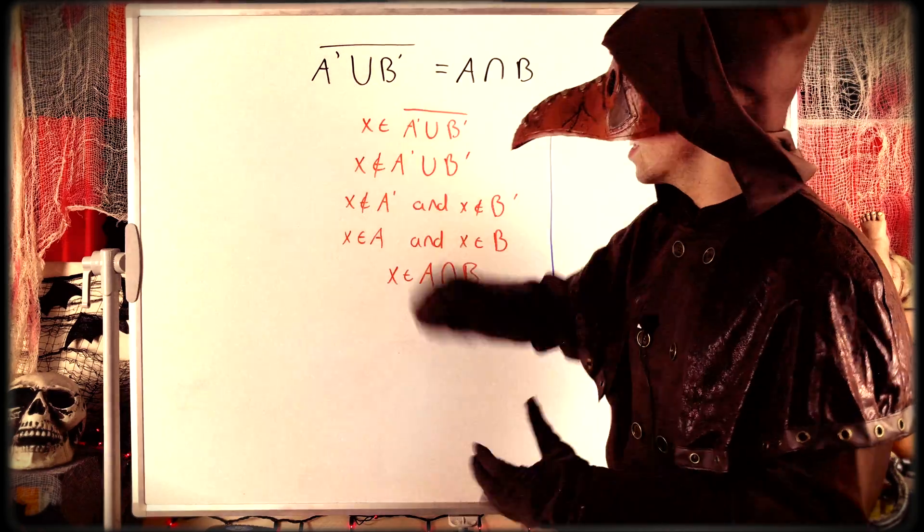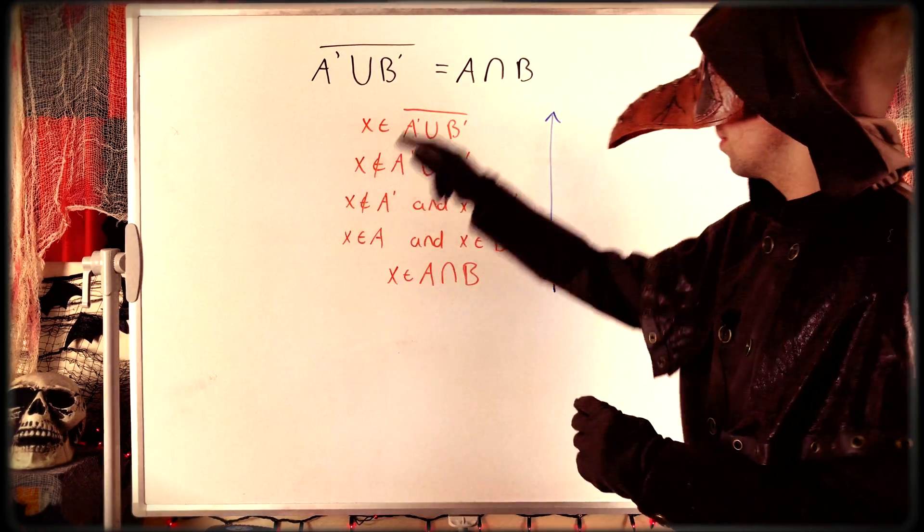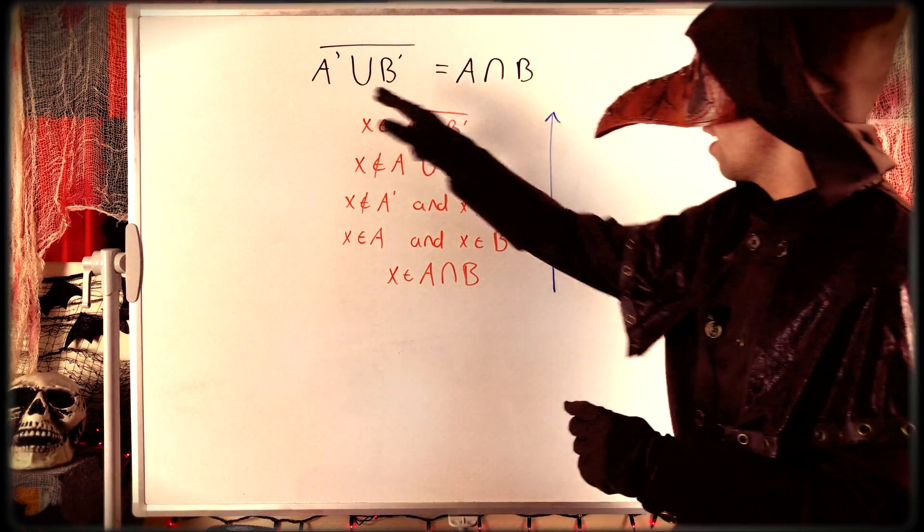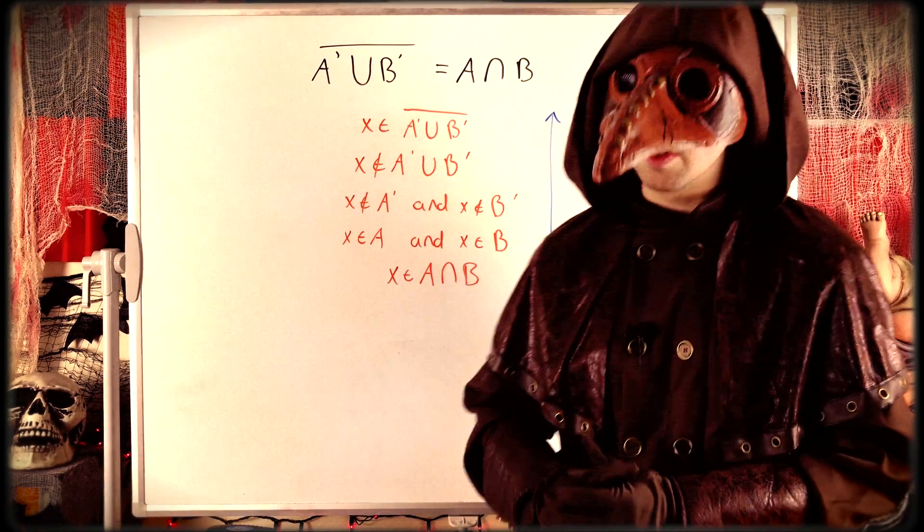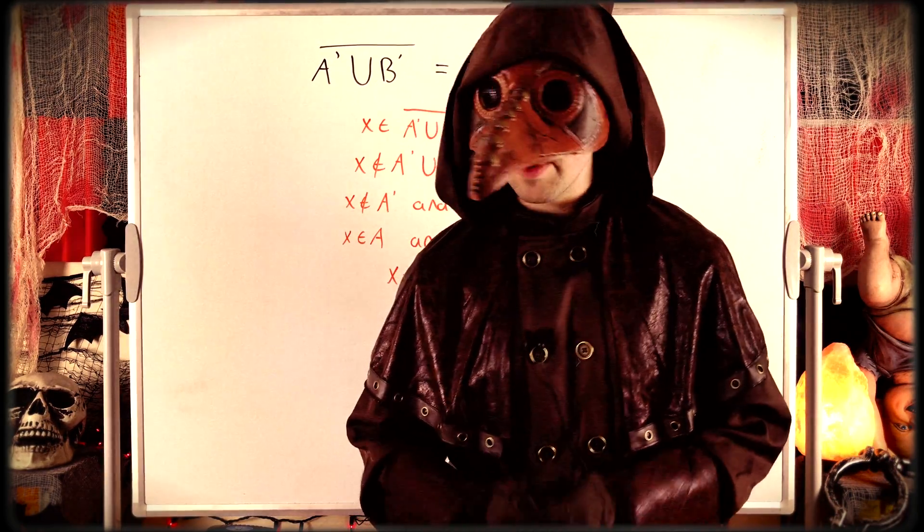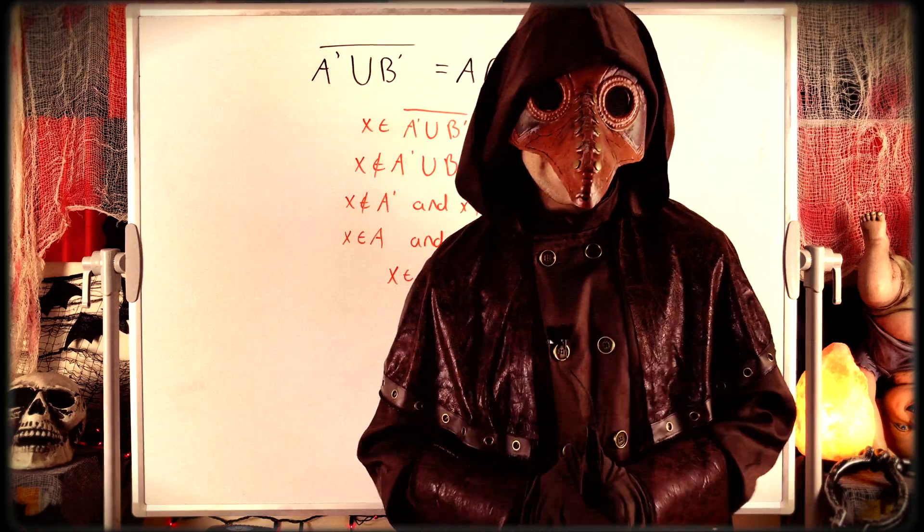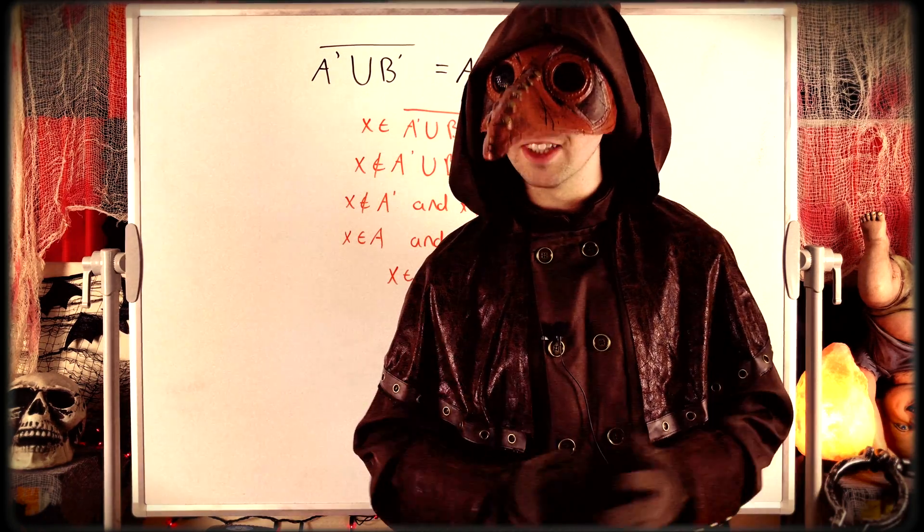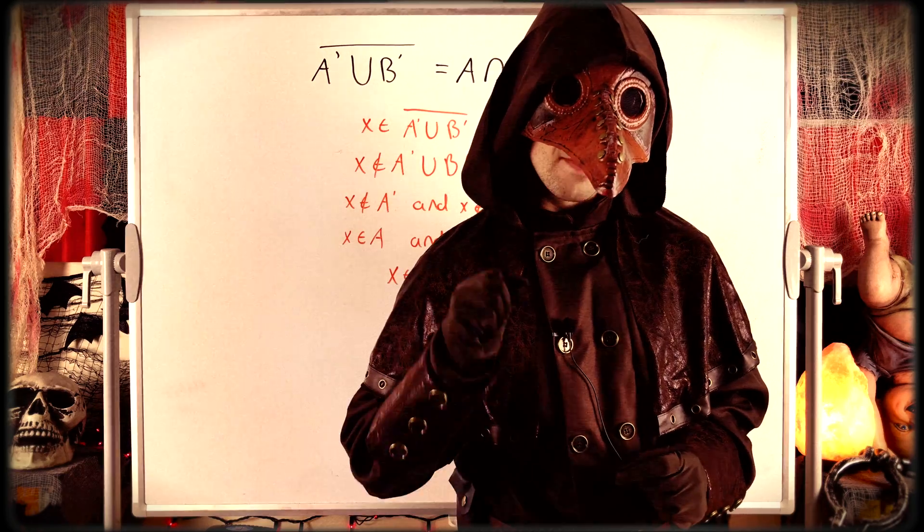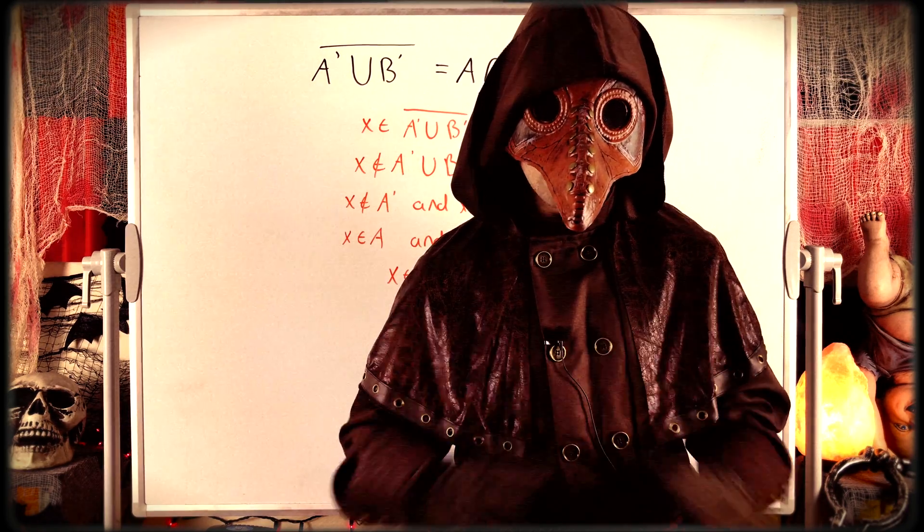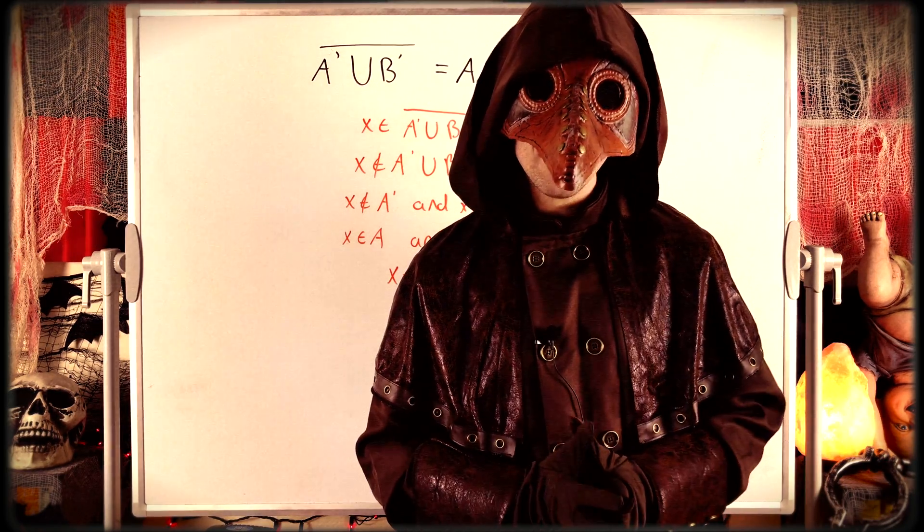So that's it. We see that if we take the complement of the union of two complements, we just get the intersection of the original sets A and B. Pretty cool. So I hope this video helped you understand the proof. Let me know in the comments if you've got any questions, need anything clarified, or have any other lesson requests. Thank you very much for watching, I'll see you next time, and be sure to subscribe for the spookiest math lessons on the internet.